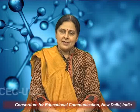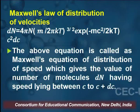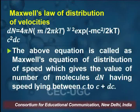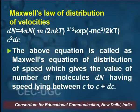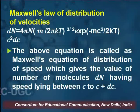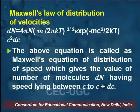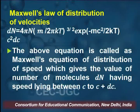Therefore equation 5 becomes: dn = n·(m/(2πkT))^(3/2)·e^(-mc²/(2kT))·4πc²·dc. Rearranging: dn = 4πn·(m/(2πkT))^(3/2)·e^(-mc²/(2kT))·c²·dc. This equation is called Maxwell's equation for distribution of speed, giving the number of molecules dn having speed between c and c+dc. On the right-hand side, dn is proportional to c² (an increasing term) and to e^(-mc²/(2kT)) (a decreasing term).